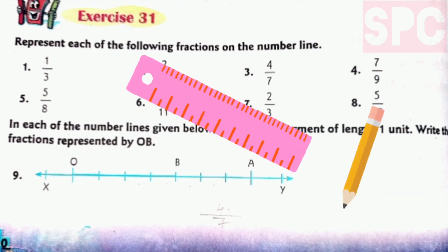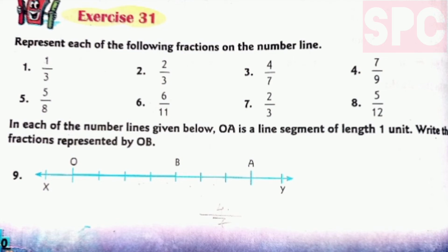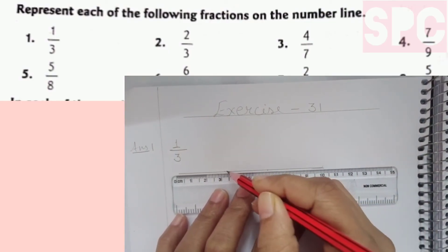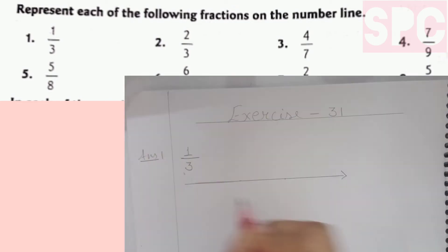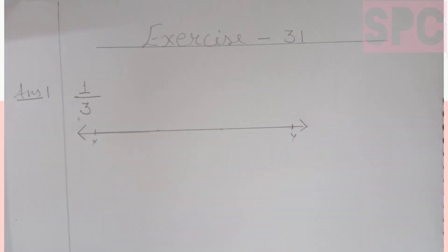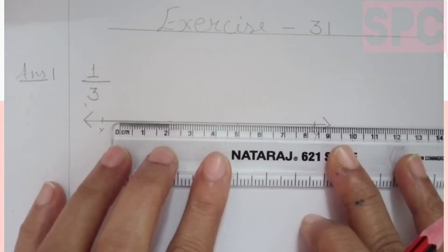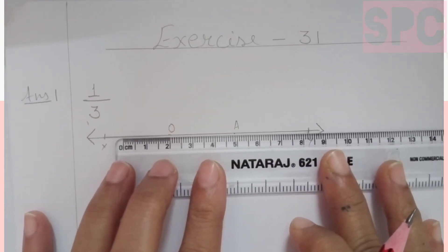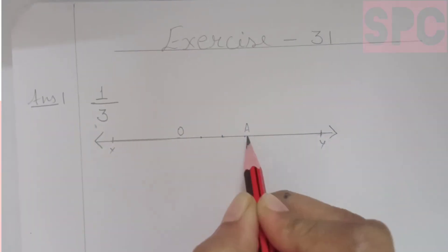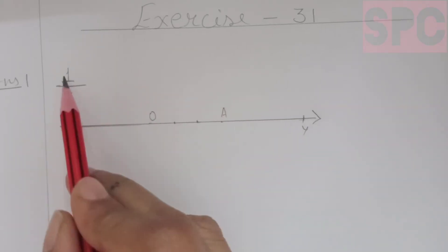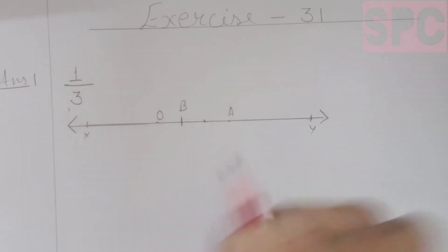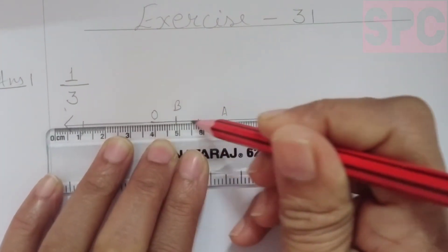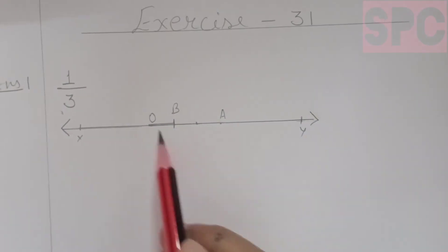Make sure you have a sharpened pencil and a ruler with you - these two things are required. In the first question, we have to represent 1 by 3 on the number line. We will draw a number line XY and on this number line, we will mark two points O and A which are 3 units apart so that we can divide OA into 3 equal parts. The numerator is 1, so from point O we will take the first part and at the end of this first part, this point will be marked as B. OB is the fraction on this number line which will represent 1 by 3.